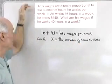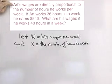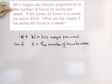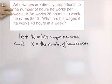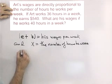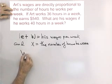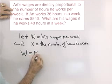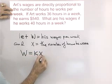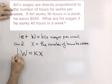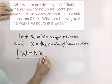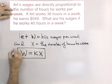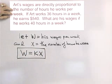Reading the problem again, it says that his wages are directly proportional to the number of hours he works per week. So that means W is equal to K times X — that's our general direct variation statement.